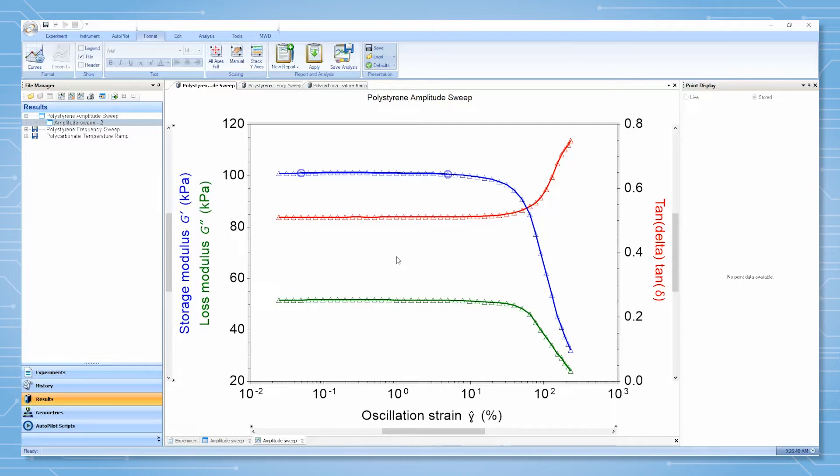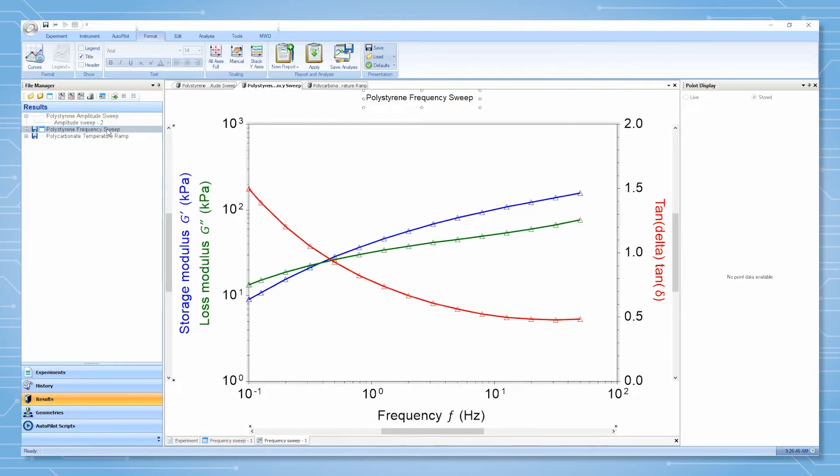The viscoelastic properties of samples measured using a rheometer or DMA should be measured within the linear region for measurements such as a frequency sweep or temperature ramp.